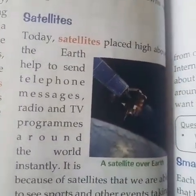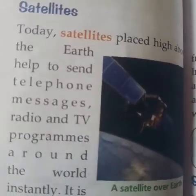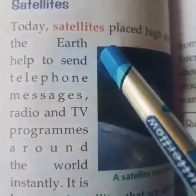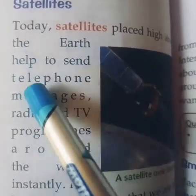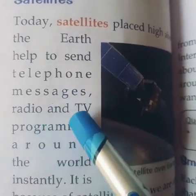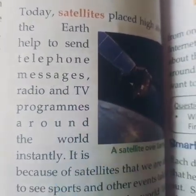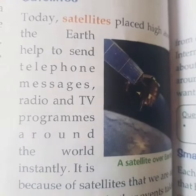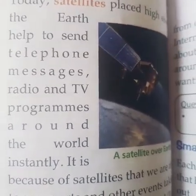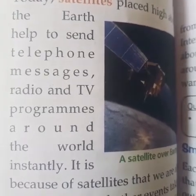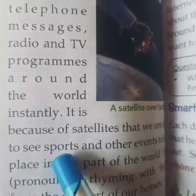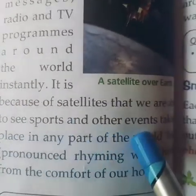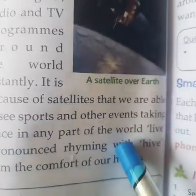Next, let us learn about satellites. In the image you can see a satellite above the earth. Today, satellites placed high above the earth help to send telephone messages, radio and TV programs around the world instantly. It is because of satellites that we are able to see sports and other events taking place in any part of the world, live.